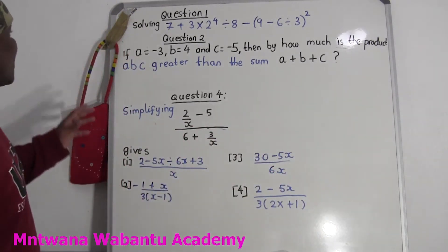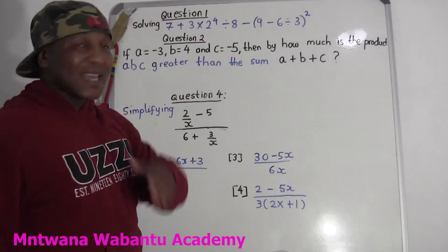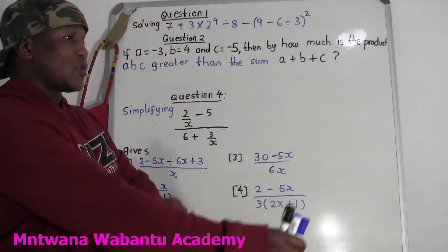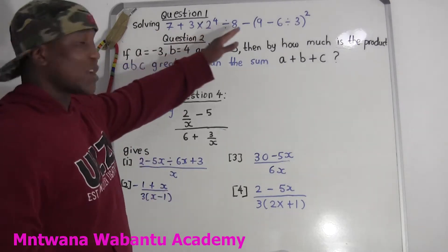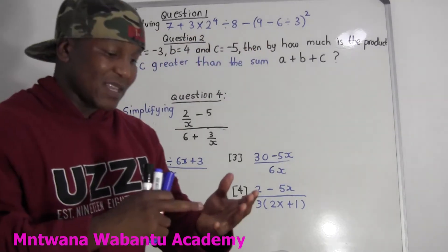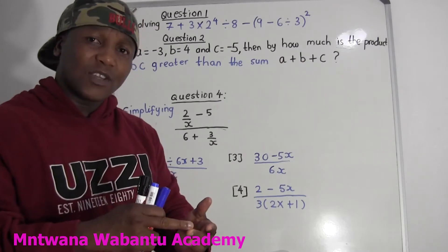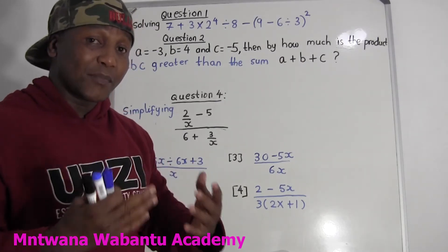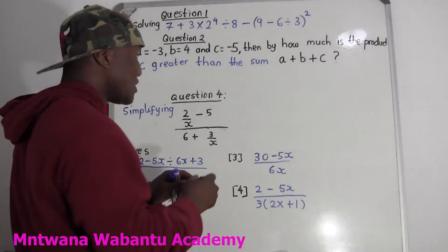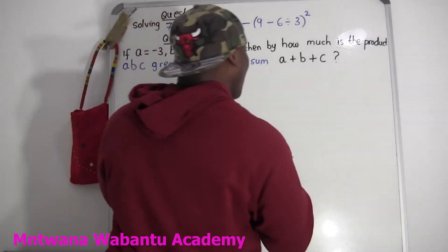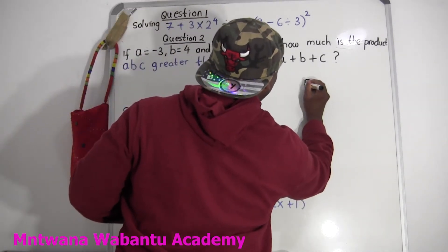Let's get started. So the first question — they say solve this question right here. So first and foremost, whenever you have a question like this mathematical expression and there's a plus, multiplication, division, and then plus and subtraction, you have to use this simple formula, which is like a trick. It's called BODMAS.